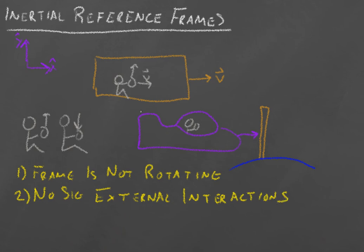The second thing is there should be no significant external interactions. In other words, in the case of the railroad car, we're assuming that we're moving at a constant velocity, we're not slowing down, we're not stopping, because slowing down and stopping are changing our momentum, and changing our momentum would be some kind of external interaction.